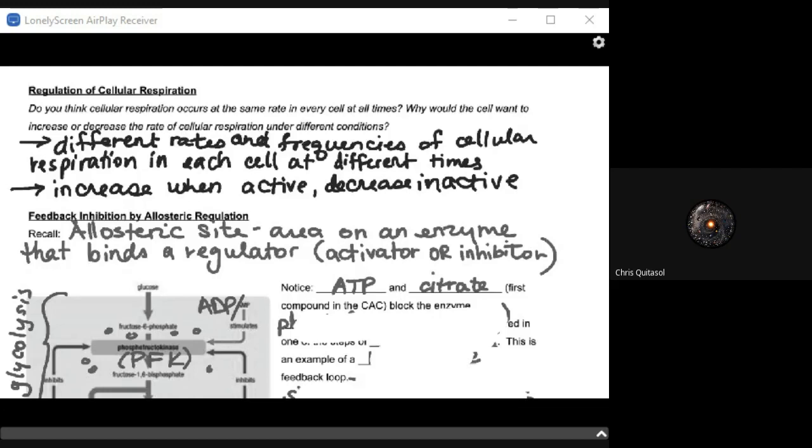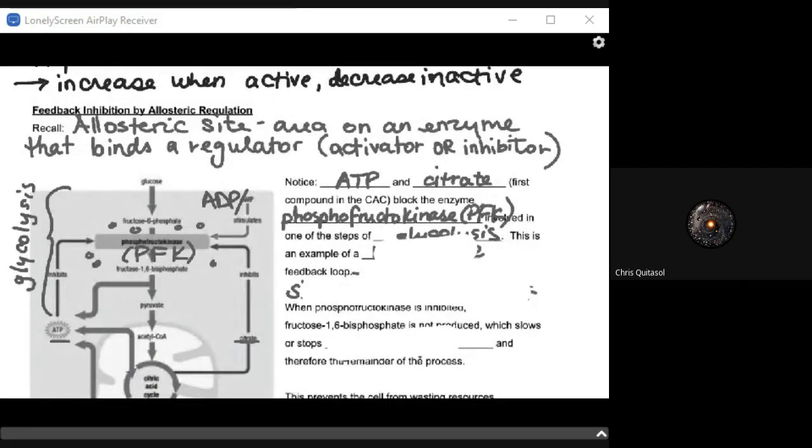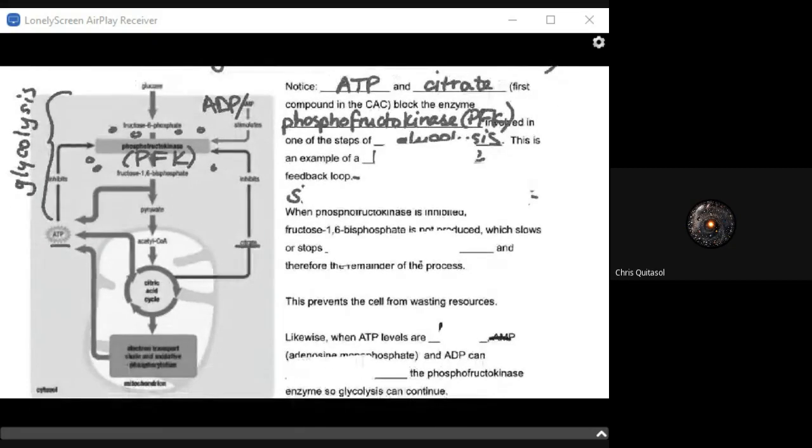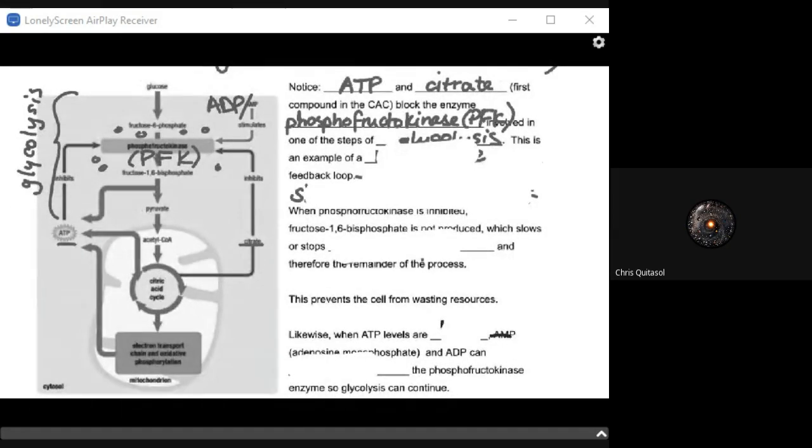Notice that ATP and citrate, that first compound in the citric acid cycle, block the enzyme PFK or phosphofructokinase. In this diagram, we have this enzyme that's present, PFK, phosphofructokinase. When it is in citric acid cycle, that process that creates that ATP and that citrate, it acts as an inhibitor for the enzyme of PFK. So it's going to block the enzyme ability to do anything else.